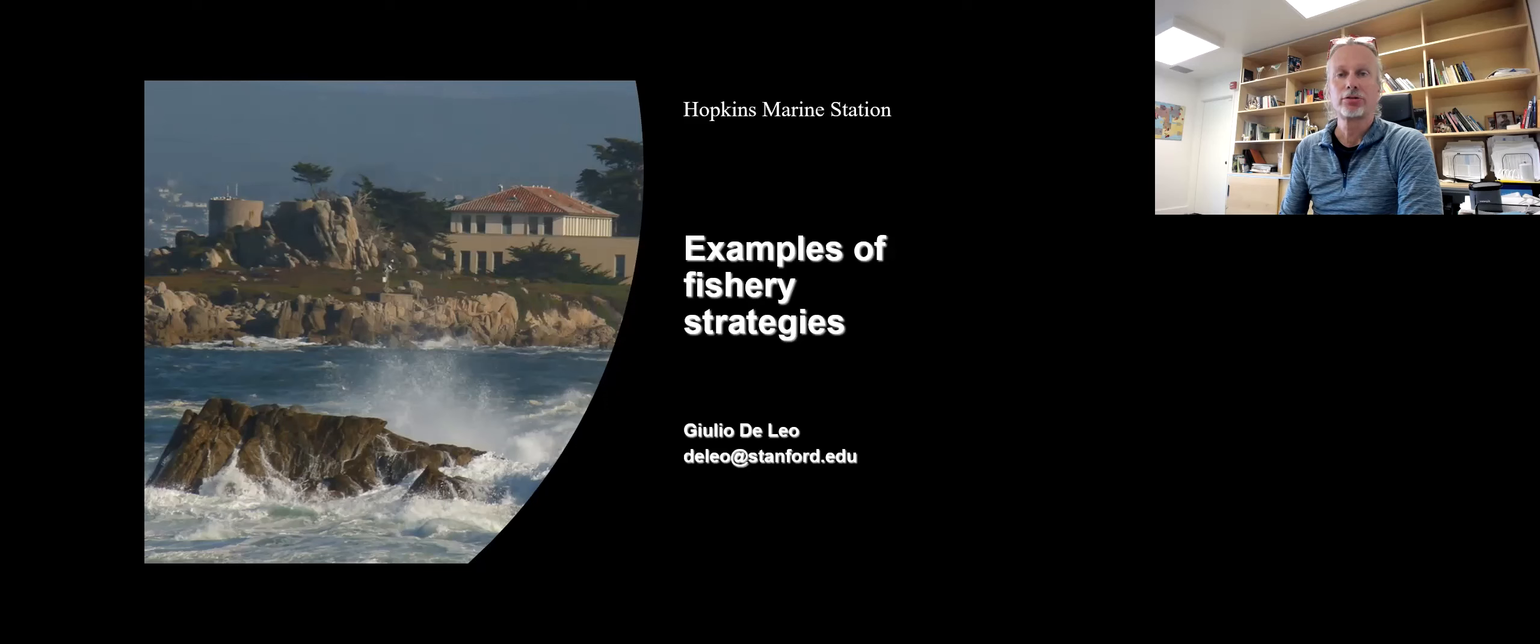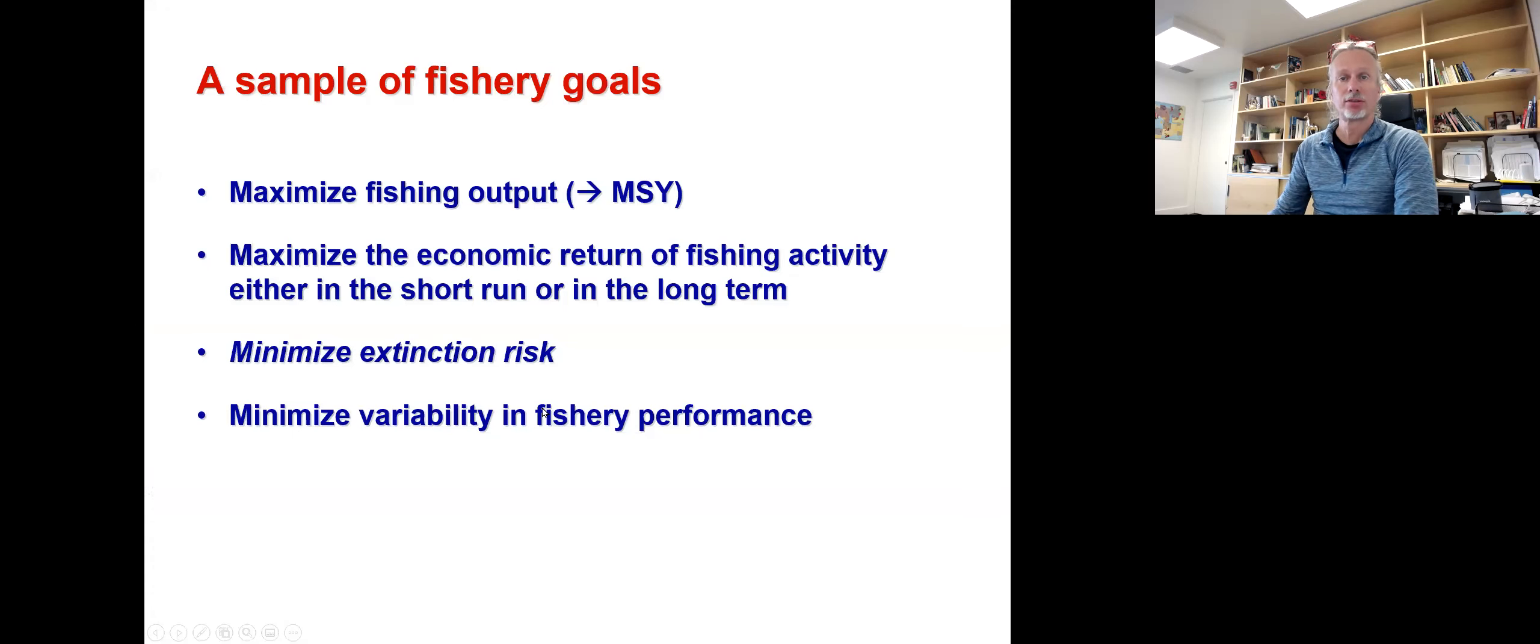Let's now have a look at some examples of fishery strategies. In particular, we're going to discuss what we can do if we want to maximize fishing output and what works in the long run to make it sustainable. We'll introduce the concept of maximum sustainable yield, look at how to maximize the economic return of fishing activity either in the short run or long term, and look at how we can minimize extinction risk and minimize variability in fishery performance.